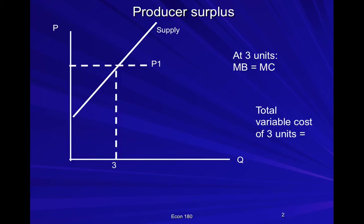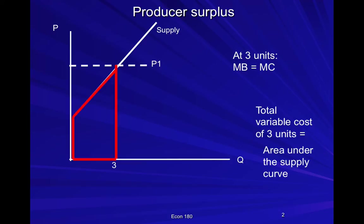The total variable cost of producing that many units is the area under the supply curve. This is a critical part to remember. In many different instances, we're going to be looking at the change in total variable cost, which is the area under the supply curve. So that trapezoid is the total extra cost of producing those three units, and that is less than the revenue, so the firm has positive producer surplus and is willing to sell those three units.